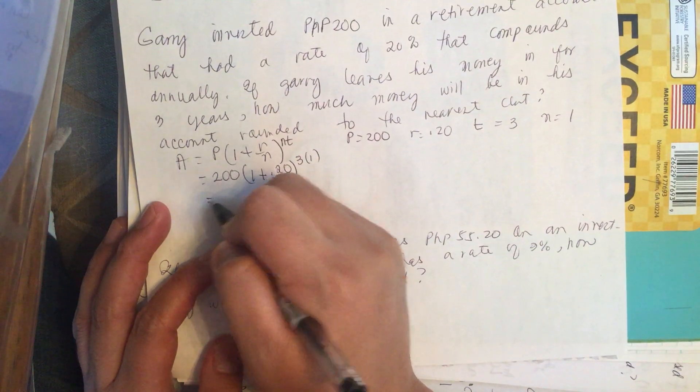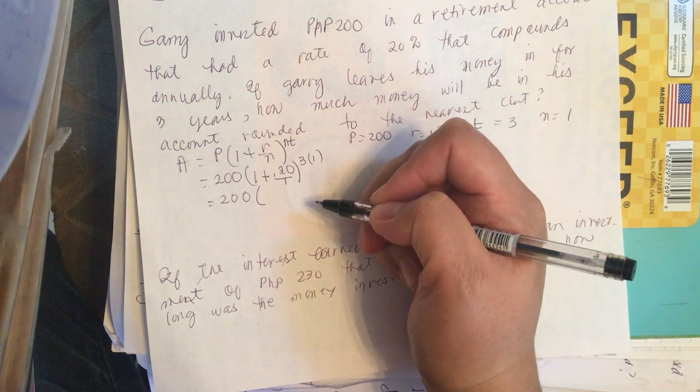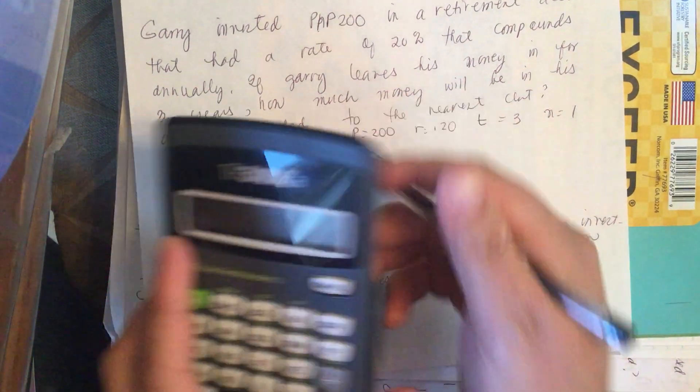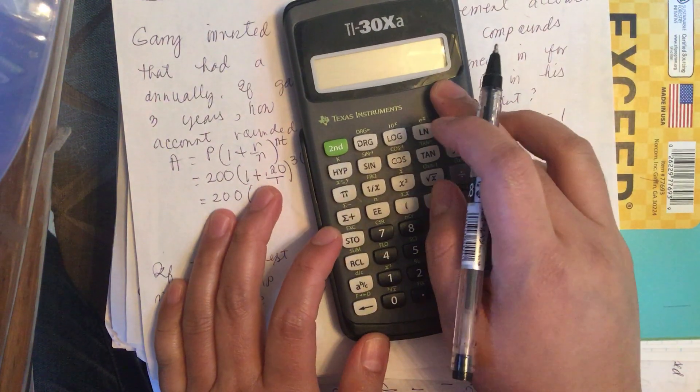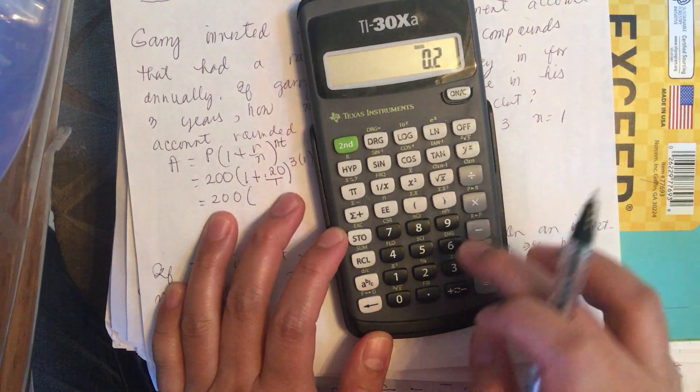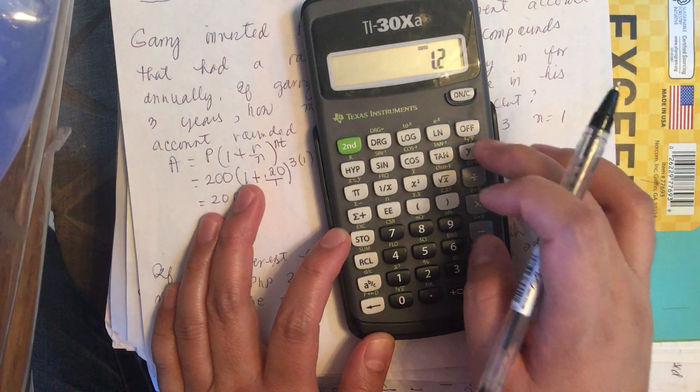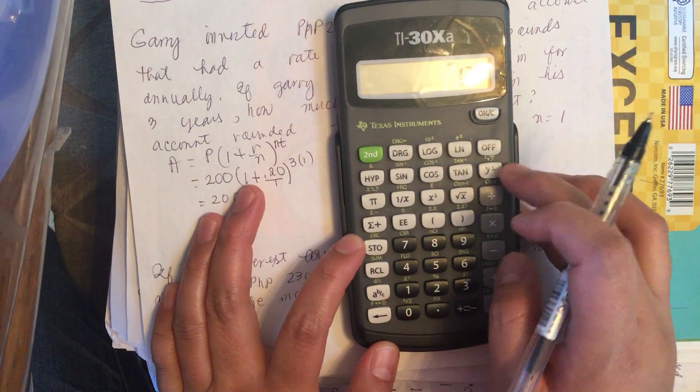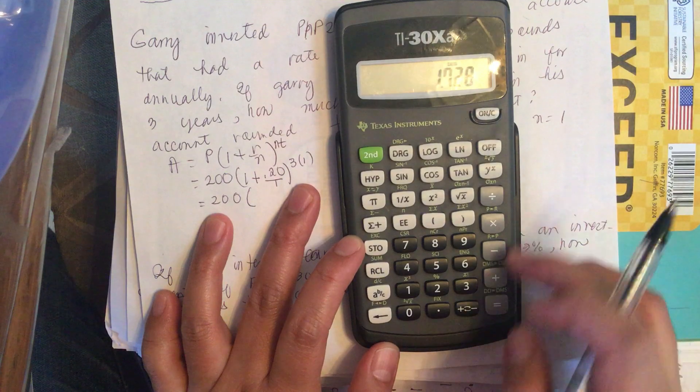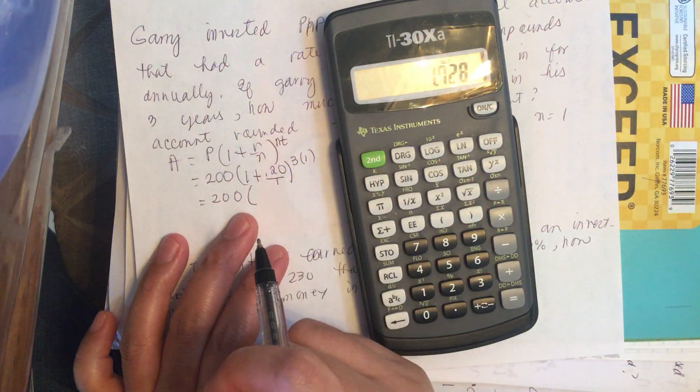This is equal to 200 times... When we calculate this kind of problem, we start here with the interest rate. So it's 0.20 divided by 1, and then we add 1, and then power to the 3. So this is 1.728.